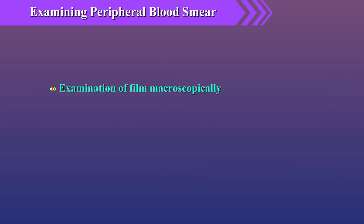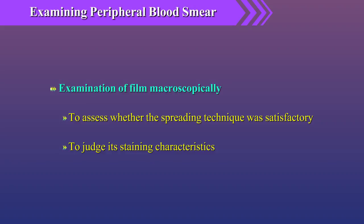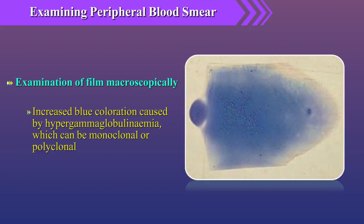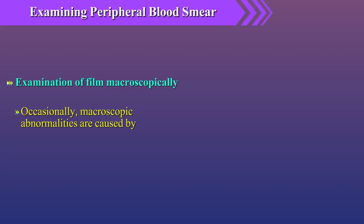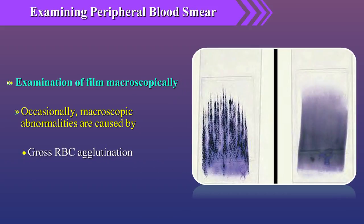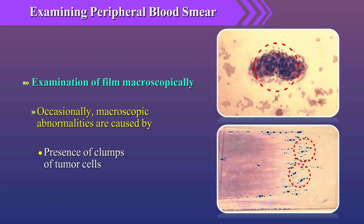First, the film should be examined macroscopically to assess whether the spreading technique was satisfactory and to judge its staining characteristics. Increased blue coloration is caused by hypergammaglobulinemia, which can be monoclonal or polyclonal. Occasionally, macroscopic abnormalities are caused by precipitation of cryoglobulin, gross RBC agglutination, platelet clumping, or presence of clumps of tumor cells.